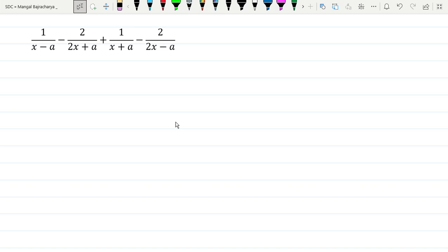The question is simplify 1 over x minus a minus 2 over 2x plus a plus 1 over x plus a minus 2 over 2x minus a. So this is simplification of the denominator.